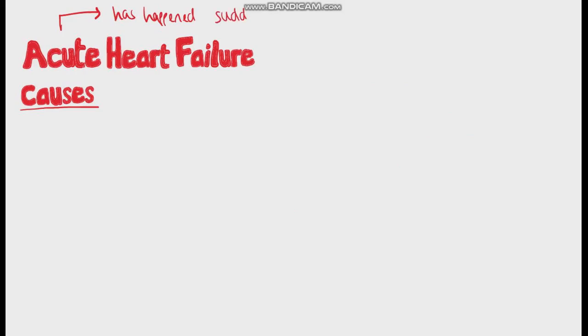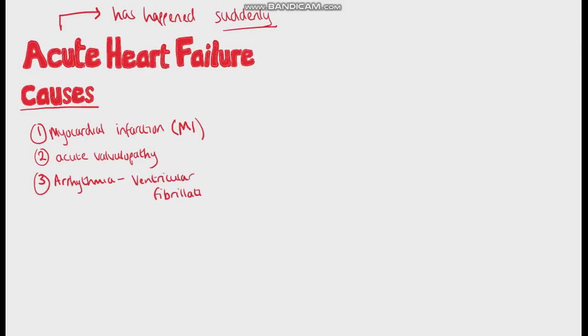In acute heart failure, the heart's inability to pump blood has happened suddenly and the most common causes include myocardial infarction, acute valvulopathy, for example the sudden rupture of a papillary muscle in a patient who recently had an MI generating an acute and massive mitral regurgitation, arrhythmias, ventricular fibrillation for example, pulmonary embolism, myocarditis and drugs such as beta blockers if used inappropriately.